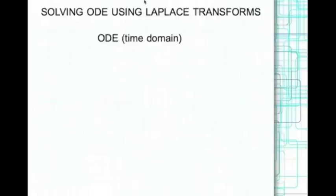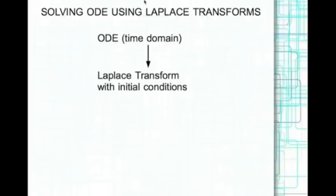So if you apply Laplace transforms to it with initial conditions, you get an expression in the Laplace domain. It's a complex fraction. The goal is to invert the complex fraction to get the time domain expression — the integrated expression — for the variable.